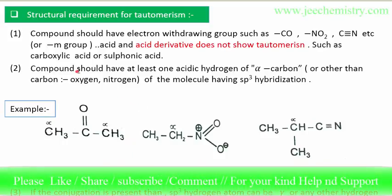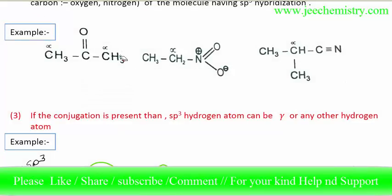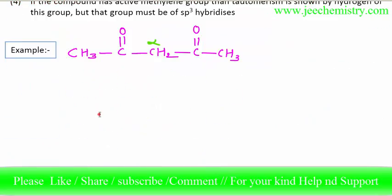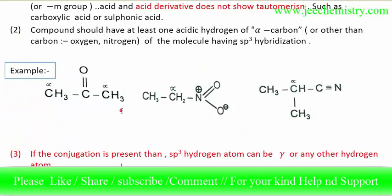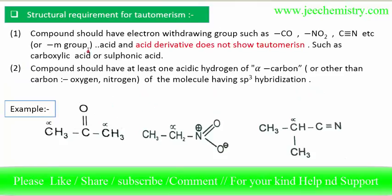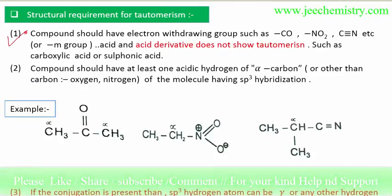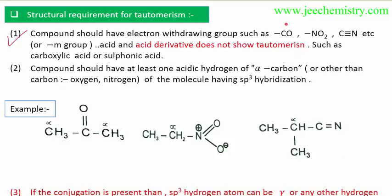Now we will learn about the structural requirements for a compound to show tautomerism. I have mentioned some points here: first point, second point, third point, and fourth point about which type of structural requirements are needed for a compound to show tautomerism. We will learn them one by one. The first point is that the compound should have an electron-withdrawing group.